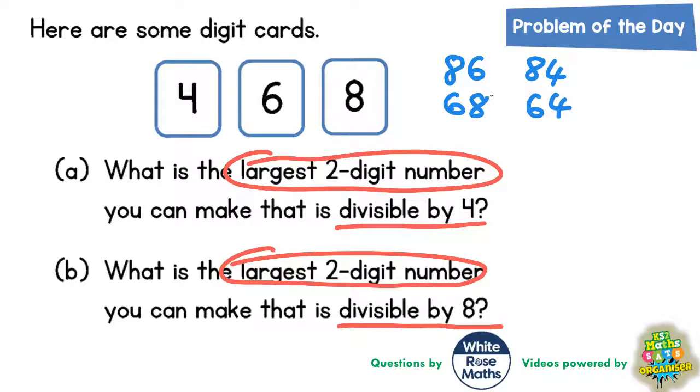And the only thing we haven't had at the start of the number yet is the four. So we could have four with the six to make 46 or four with the eight to make 48. And that is actually all of the two digit numbers we can make.